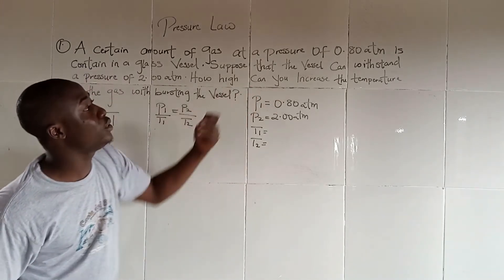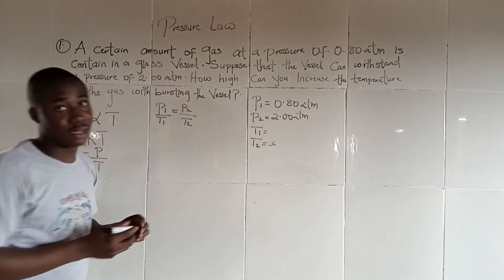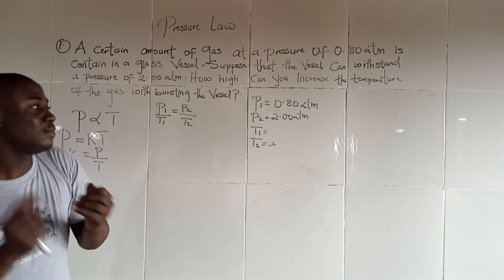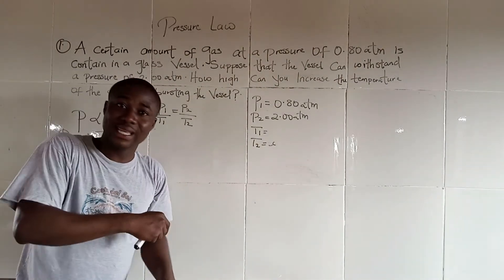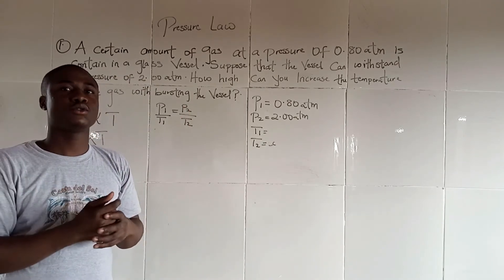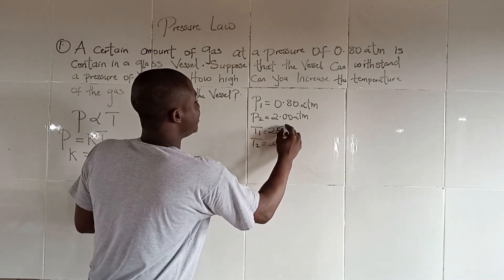It said how high can you increase the temperature, so we're looking for this. But what is T1? You can see that this reaction requires the vessel. It means that this reaction was first maintained at room temperature. So T1 is 25 degrees Celsius.